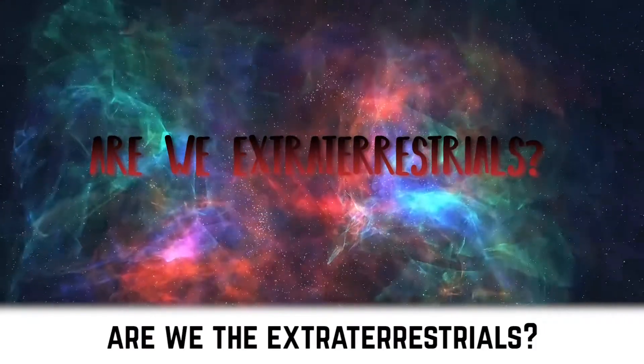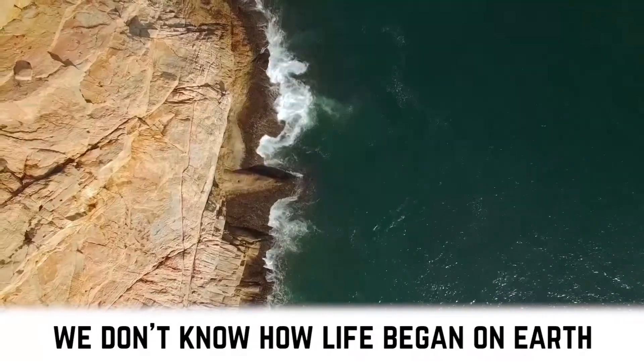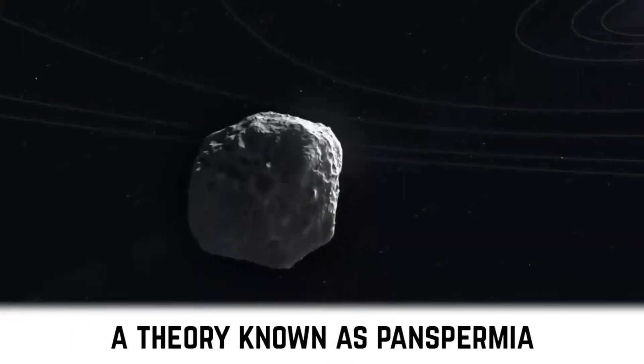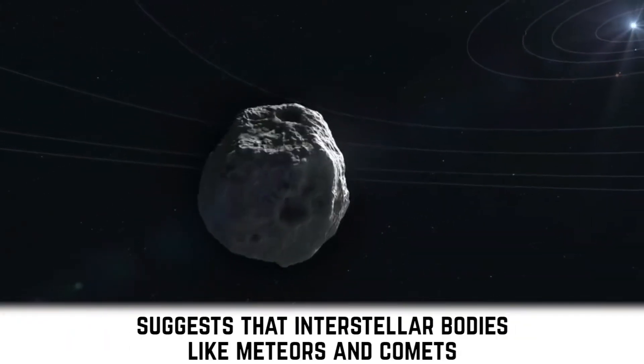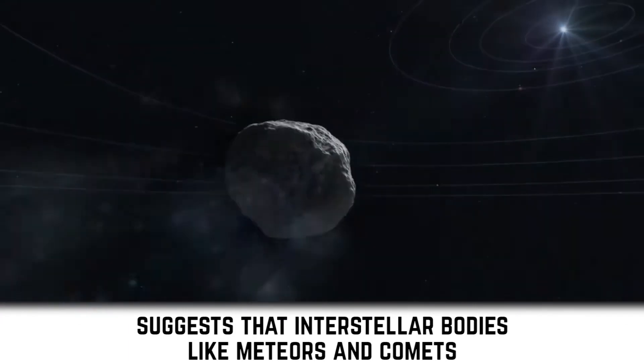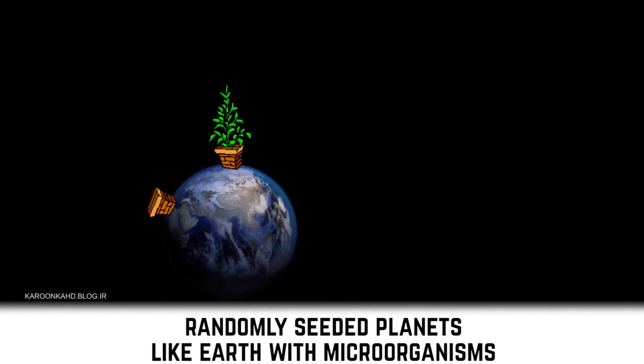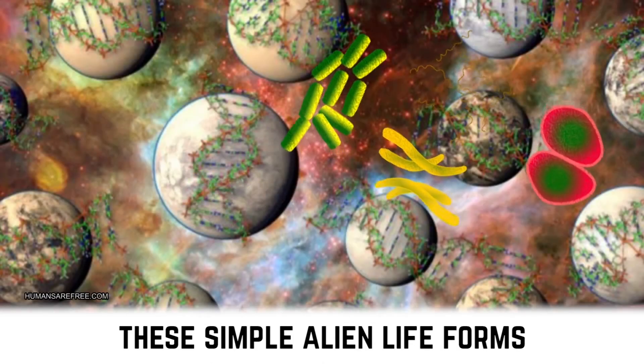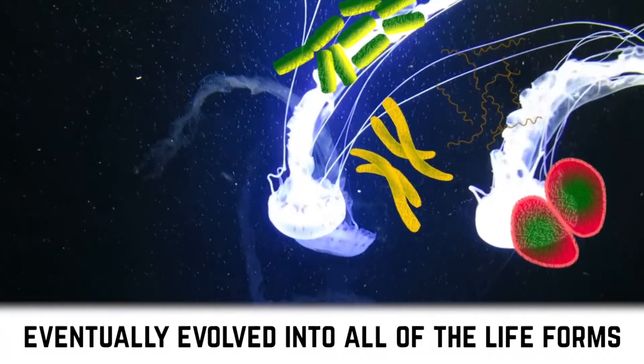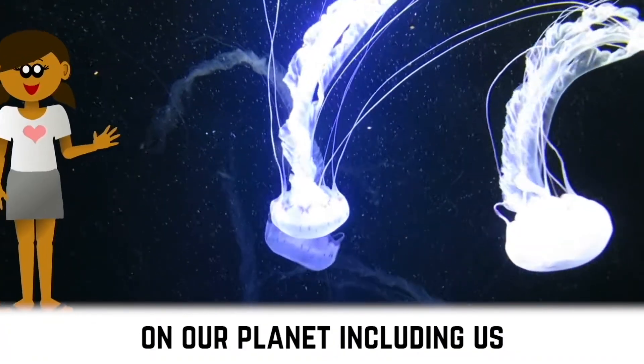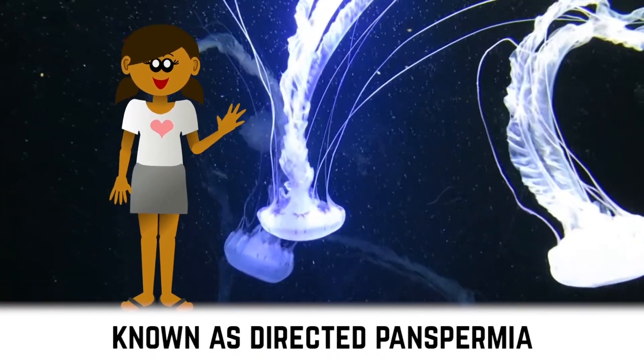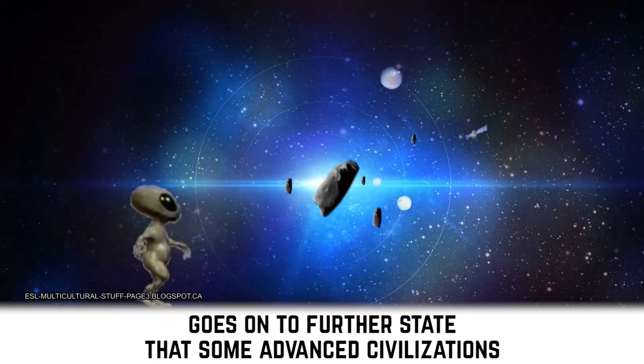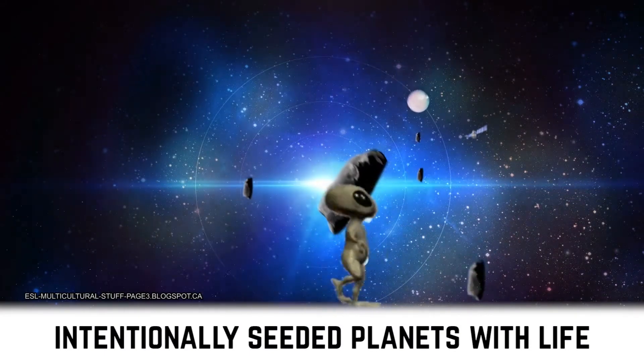Are we the extraterrestrials? We don't know how life began on Earth, or even if it did begin on Earth at all. A theory known as panspermia suggests that interstellar bodies, like meteors and comets, randomly seeded planets like Earth with microorganisms. These simple alien life forms eventually evolved into all the life forms on our planet, including us. One version of this theory, known as directed panspermia, goes on to further state that some advanced civilizations intentionally seeded planets with life.